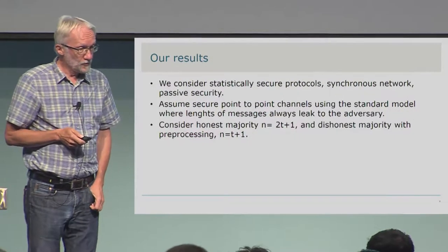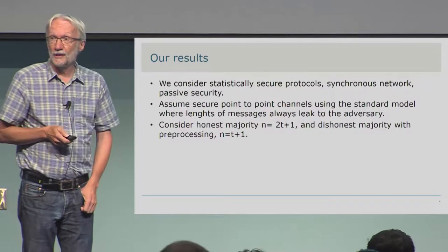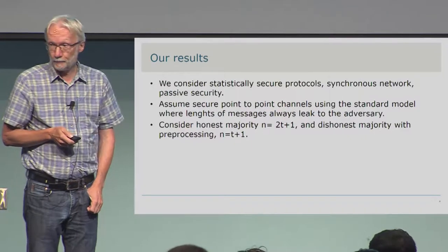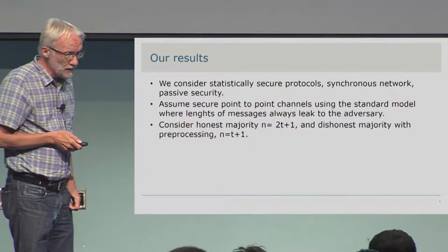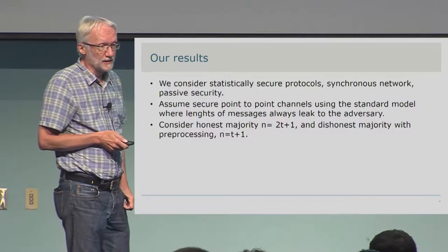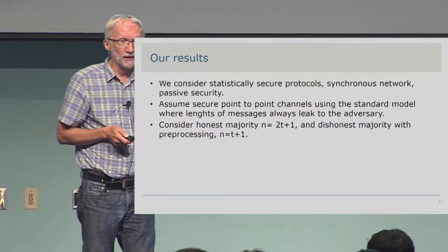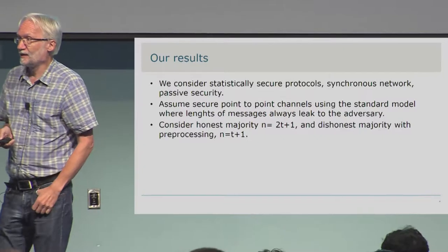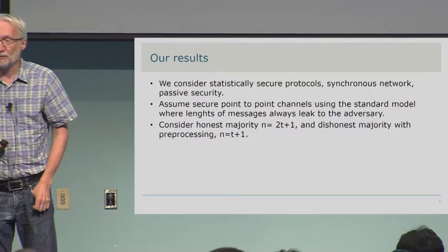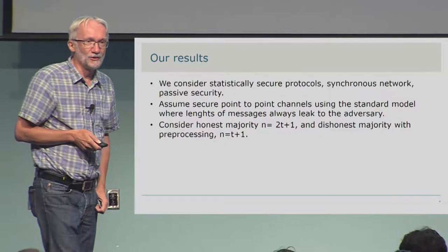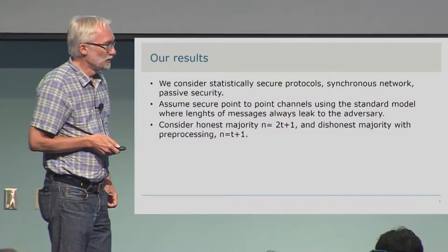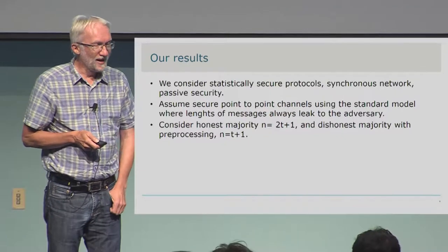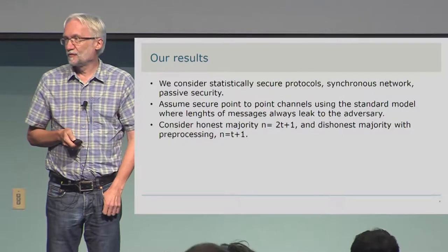Our results. The model first: we consider statistically secure protocols, synchronous network, and passive security — semi-honest security. We assume secure point-to-point channels using the standard model where the length of the message you send always leaks to the adversary. This is very natural, because if you ever implement a secure channel, you shouldn't expect to be able to hide the length of the message from the adversary.